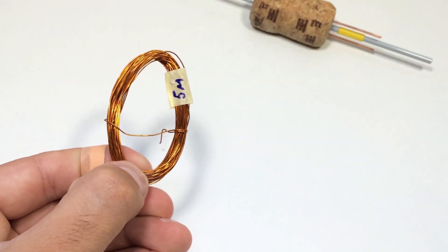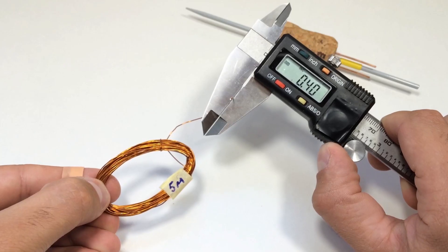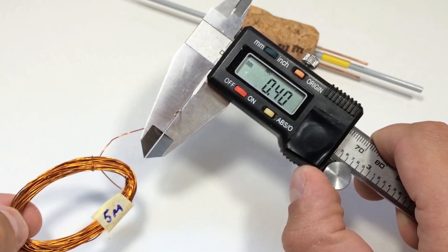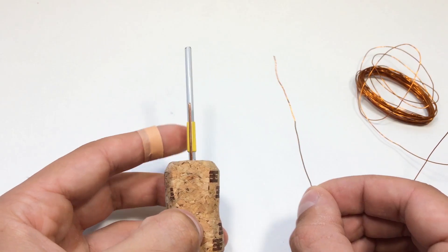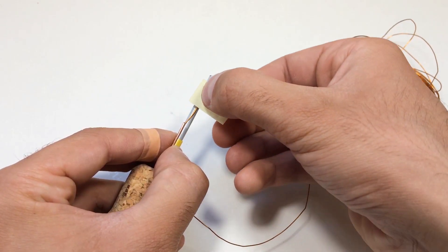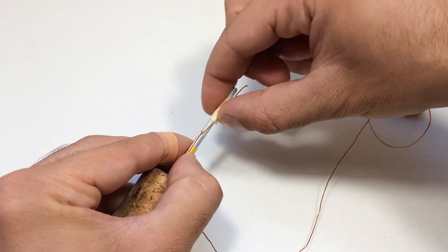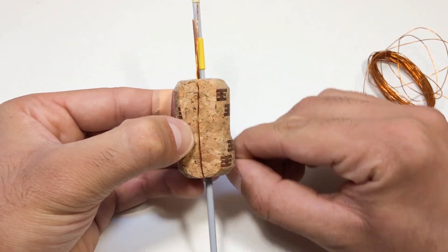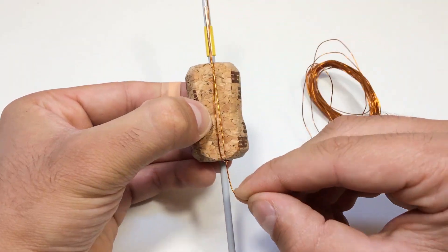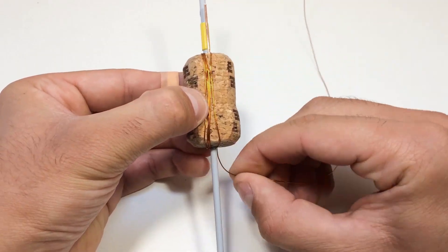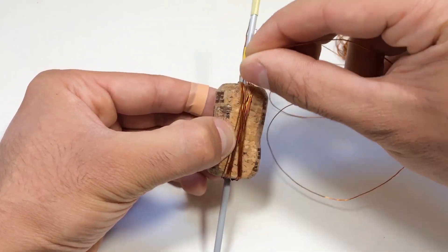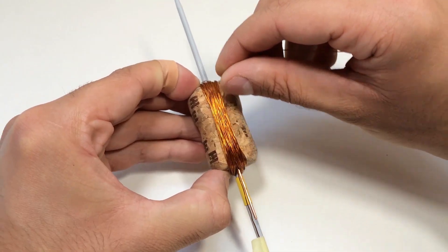Next up, the coil itself. Take the thin insulated wire and start winding it tightly around the cork. Go layer by layer, keeping the turns neat. The more turns you make, the stronger the electromagnetic effect. Around 100 to 150 turns is usually enough. Leave both ends sticking out and scrape off the insulation so we'll have good electrical contact.